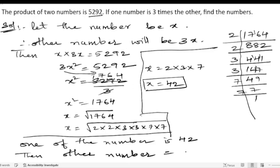So we need to multiply this 42 with 3. 3 into 2 is 6, 3 into 4 is 12. So 126.